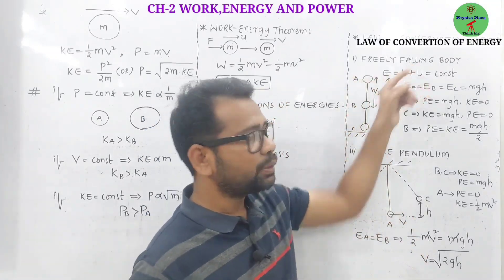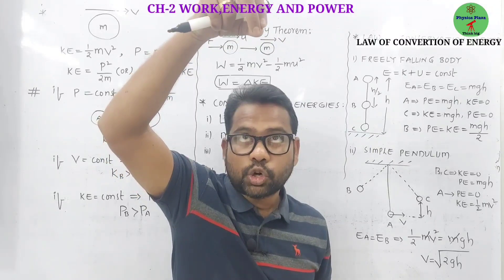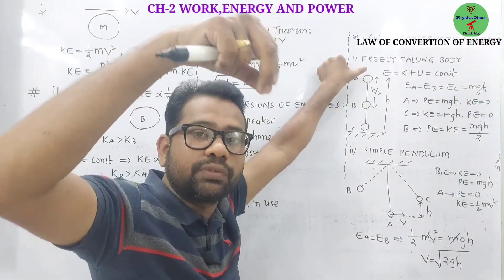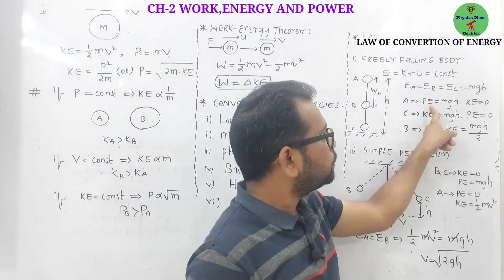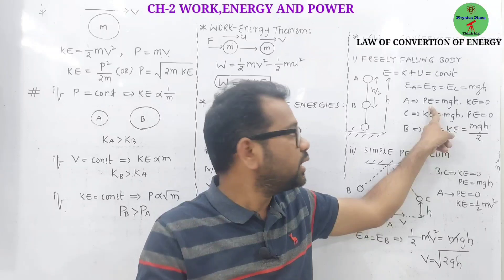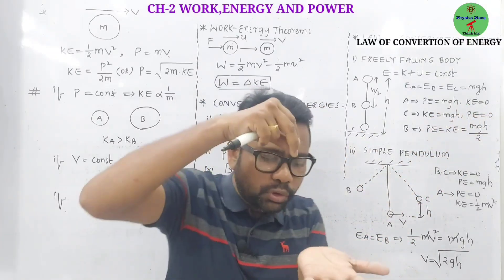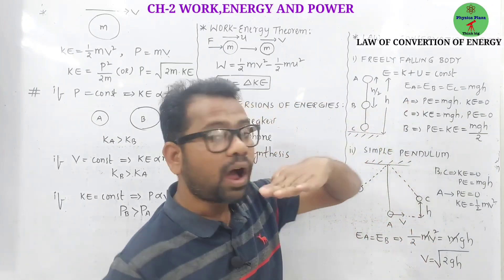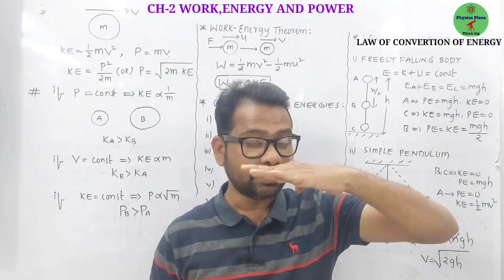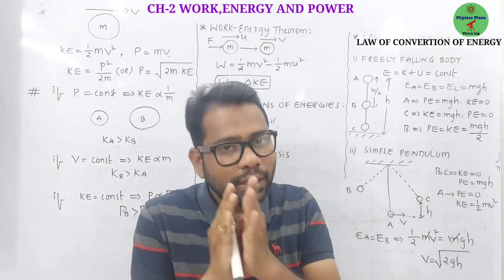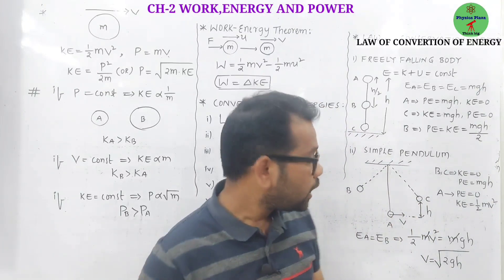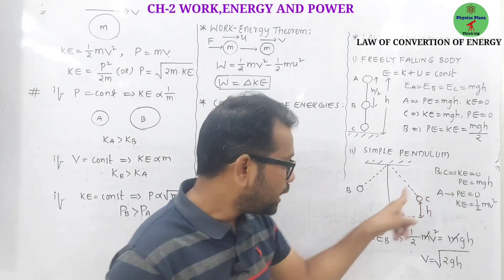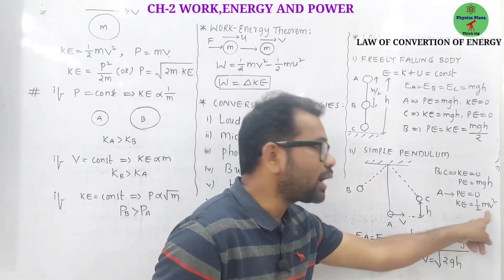Two examples where mechanical energy remains constant: freely falling body and simple pendulum. For a freely falling body of mass m dropped from height h: at the initial position, velocity is zero, so mechanical energy equals only potential energy (mgh), kinetic energy is zero. Just before hitting the ground, mechanical energy is only kinetic energy, potential energy is zero. At exactly half the height, potential energy equals kinetic energy, both equal mgh/2. For a simple pendulum: at extreme positions it has only potential energy; at mean position it has only kinetic energy.